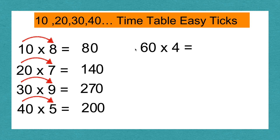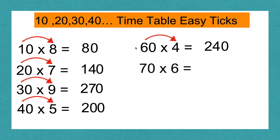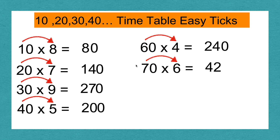60 times 4: 6 times 4 equals 24. Add the 0, and 60 times 4 equals 240. 70 times 6: 7 times 6 equals 42. Add the 0, and 70 times 6 equals 420.